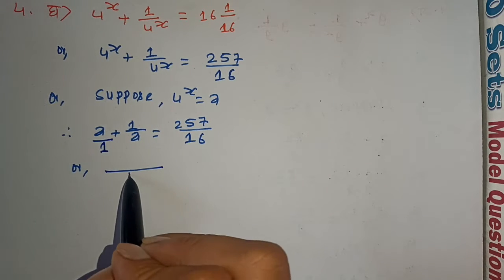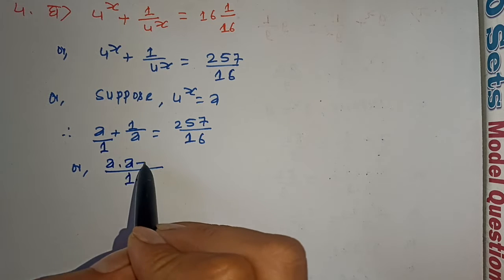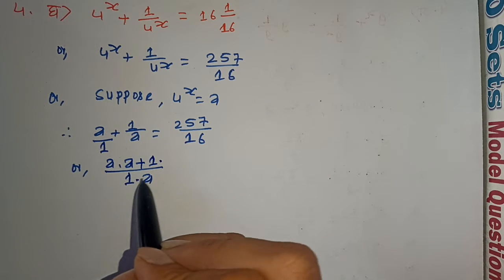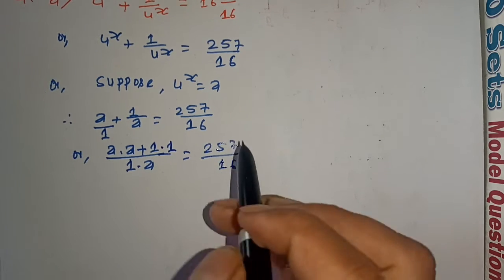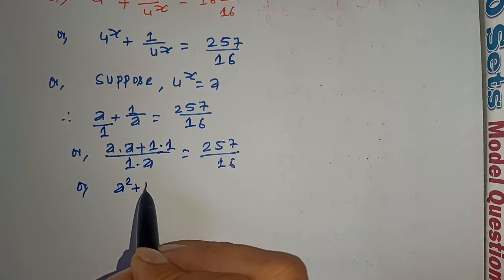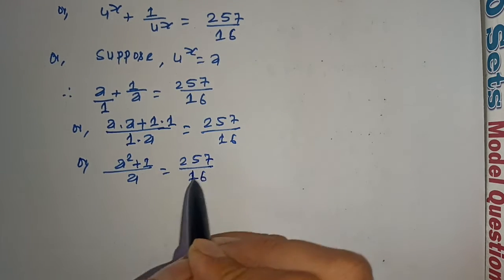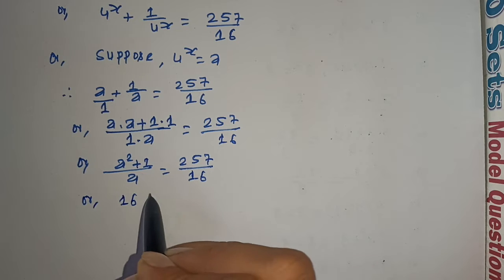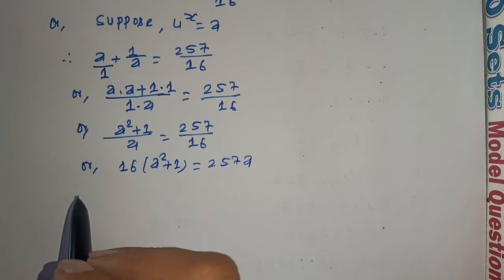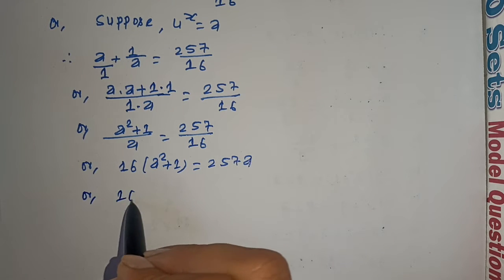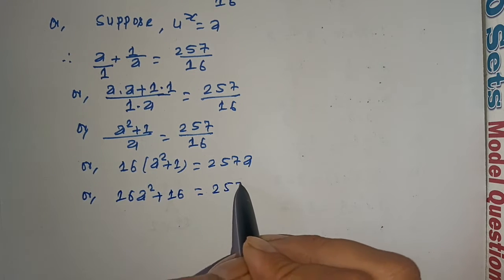Cross multiplying: a squared plus 1 equals 257 upon 16 times a. So 16a squared plus 16 into 1 equals 257a. That gives us 16a squared plus 16 equals 257a, which simplifies to 16a squared minus 257a plus 16 equals zero. Multiplying through by 16: 16a squared plus one equals 257a.